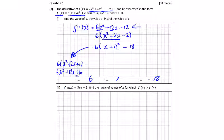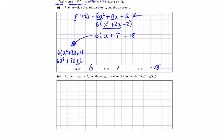And then we're told if g(x) is equal to 36x plus 5, find the range of values for which f'(x) is greater than g'(x). Well let's get g'(x), that's going to be 36.